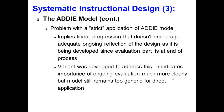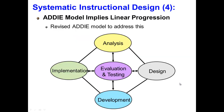Given that the evaluation is strictly at the end of the process, there are no changes to be made after the model has already been designed. A variant was developed to address this problem and indicates the importance of ongoing evaluation much more clearly. However, this revised model still remains far too generic for direct application. Here is a graphical illustration of the revised ADDIE model, and as can be seen, evaluation and testing are now a part of each of the other phases.